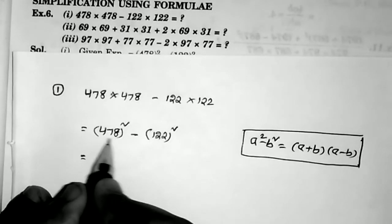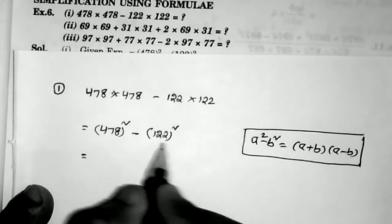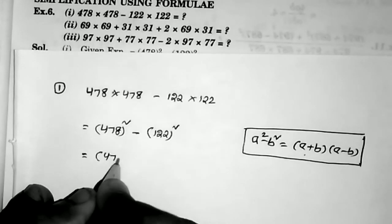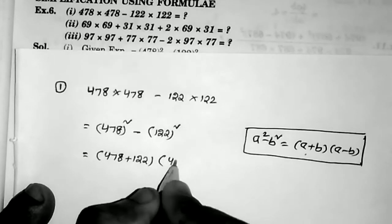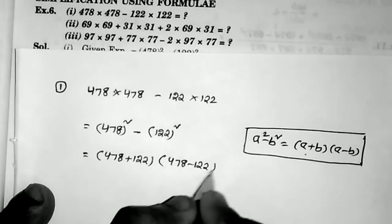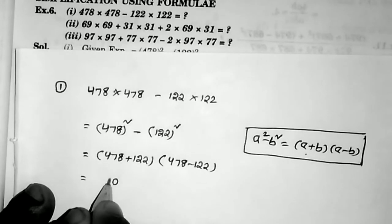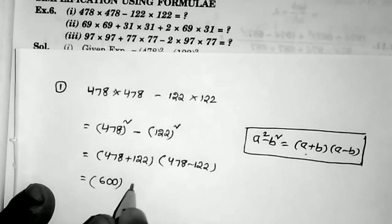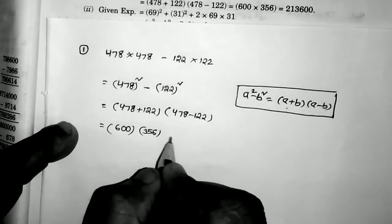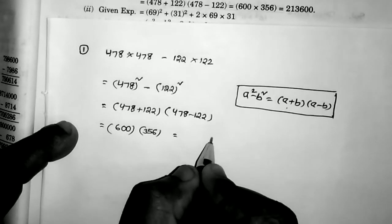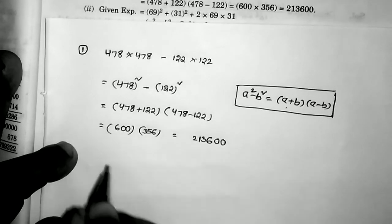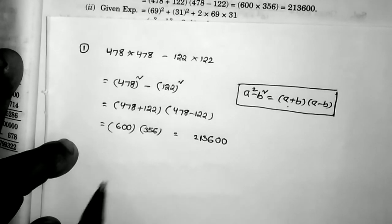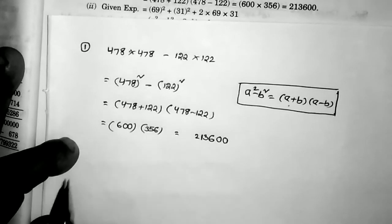Applying the formula with a = 478 and b = 122: (a + b)(a − b) = (478 + 122)(478 − 122) = 600 × 356. Multiplying: 600 × 356 = 213,600. So this is the required answer using the a² − b² = (a + b)(a − b) formula.